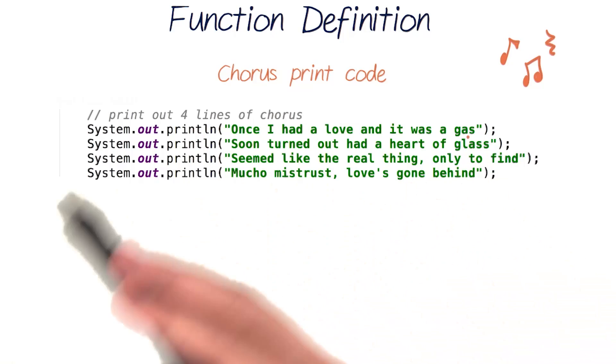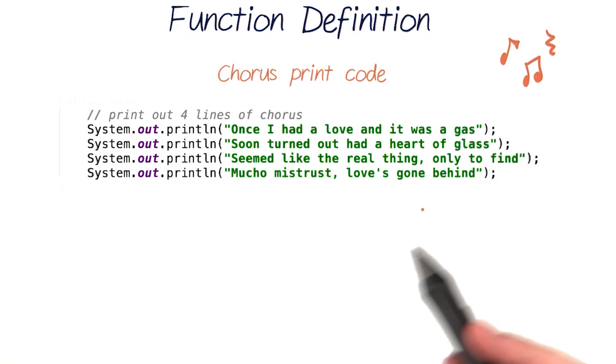Here's the print code for the chorus of the Blondie song Heart of Glass that we wanted to repeat. Now let's actually write out the function definition for printing this chorus.